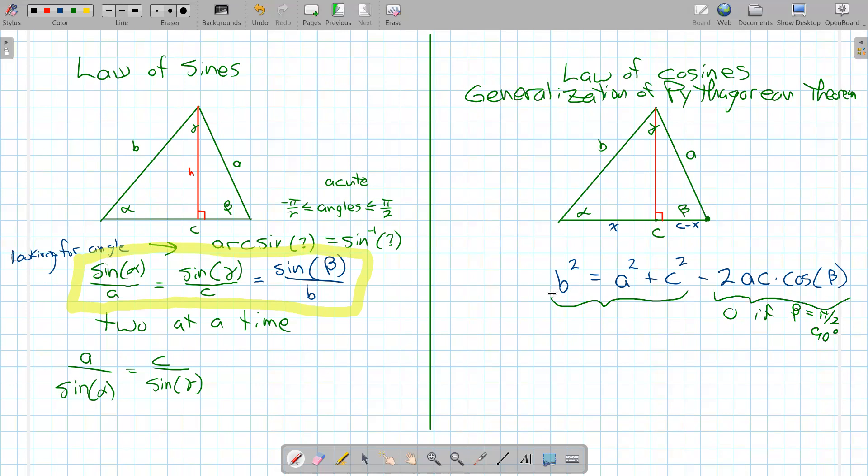And then the way to think about the Pythagorean, this law of cosines, this new version of the Pythagorean theorem, is that this angle beta, it's always opposite this lone side B, and it's always the angle between the sides over here, A and C. Notice that angle beta is between A and C.